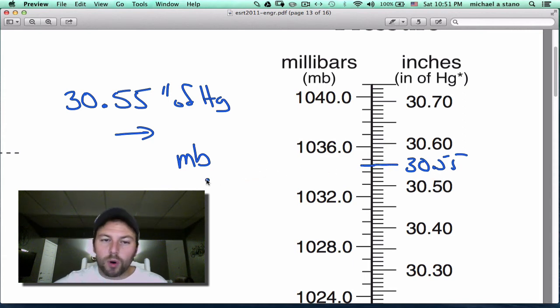But it is between the 1032 and the 1036. So we can count up. Remember, each one of these is worth one millibar. So 1032, 1033, 1034 point, and we see that it's halfway in between the next one. Five millibars. That's it. Done.